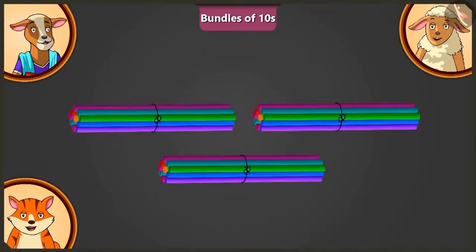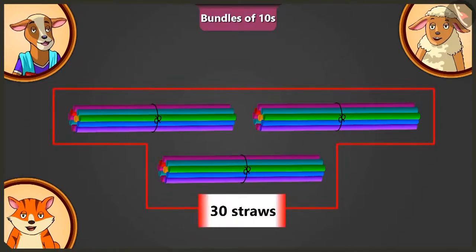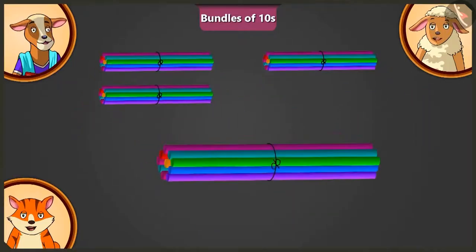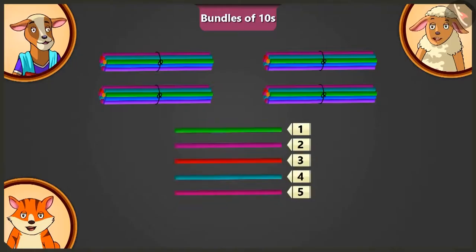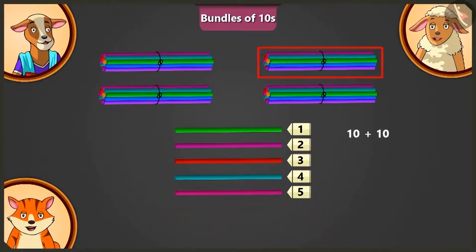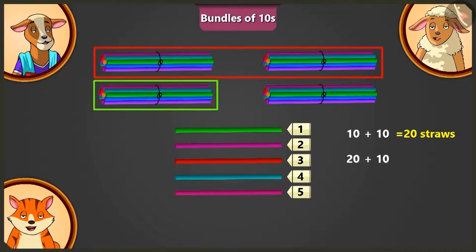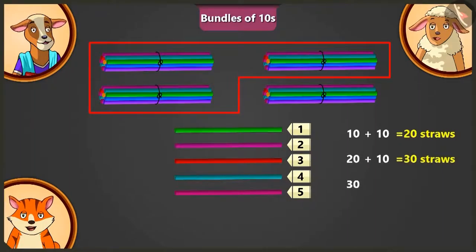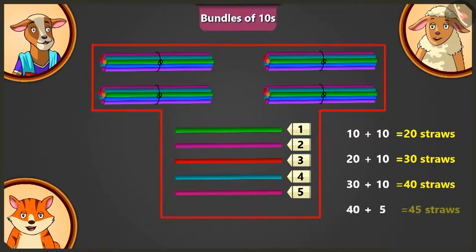Well done, Lily. You need forty-five straws. There are thirty straws here. So now, how many more straws will we add to them? We will put one more bundle of ten straws and keep five straws. Now tell me, how many straws are there in total? Adding ten and ten — twenty. Adding ten to twenty — thirty. Adding ten to thirty — forty. Adding five to forty — so, there are forty-five straws in total.